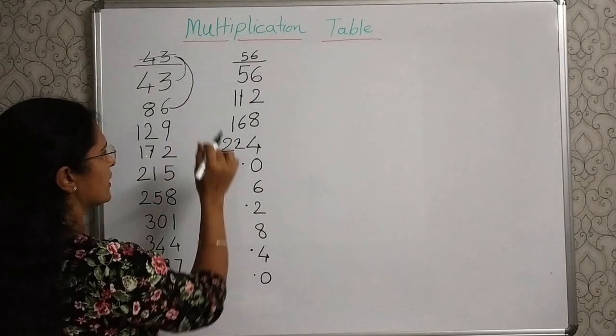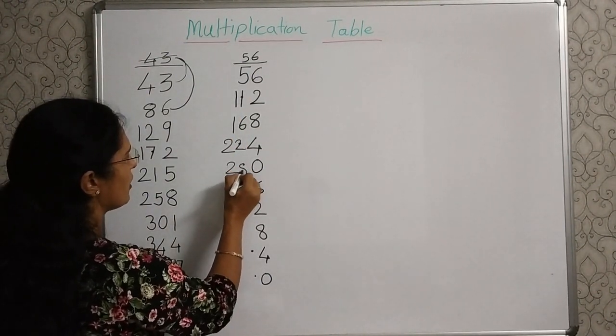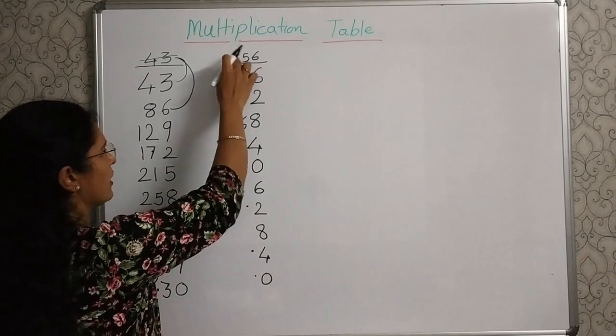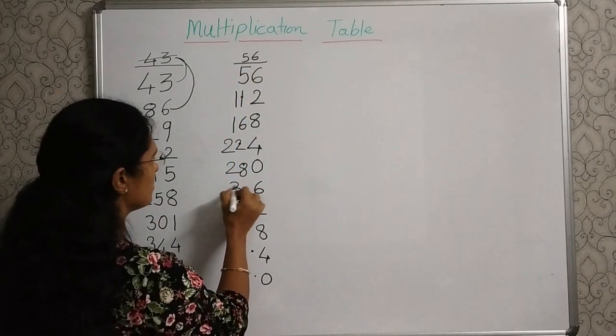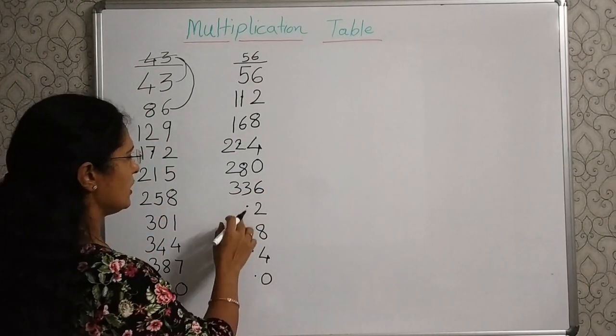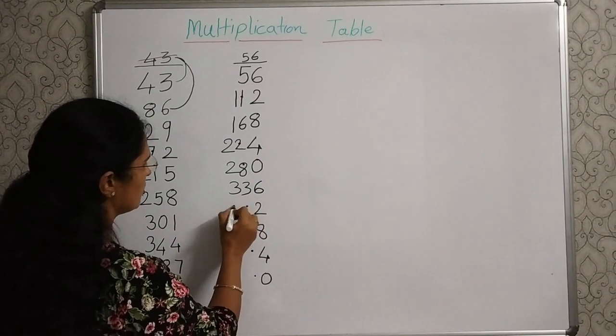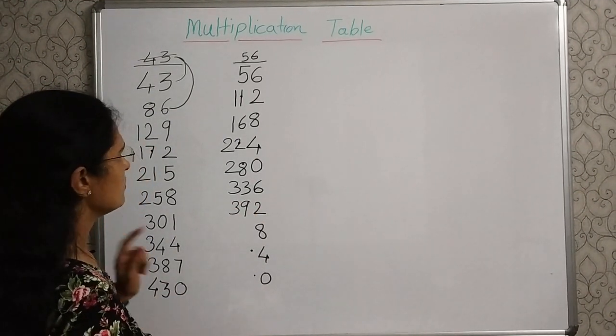22 plus 5, 27. And this 1, 28. 28 and 5, 33. So, right here, 33. 33 plus 5, 38. And this dot, that is carryover, 39.